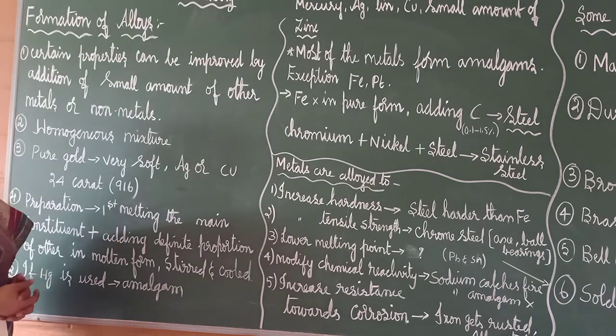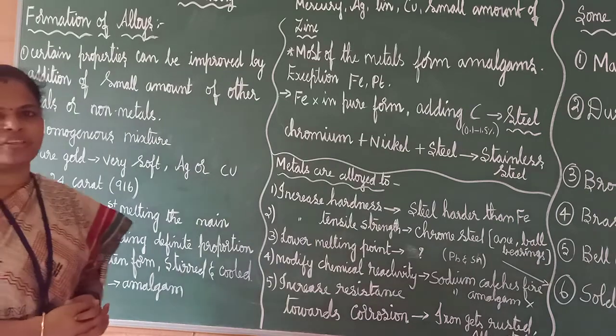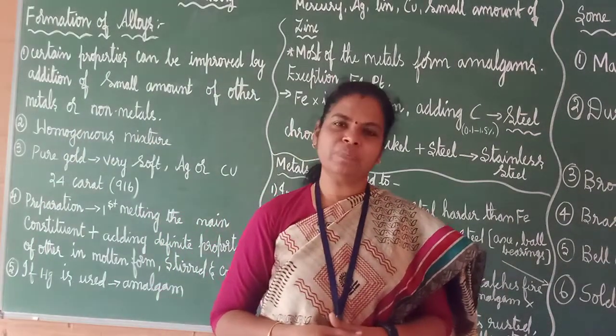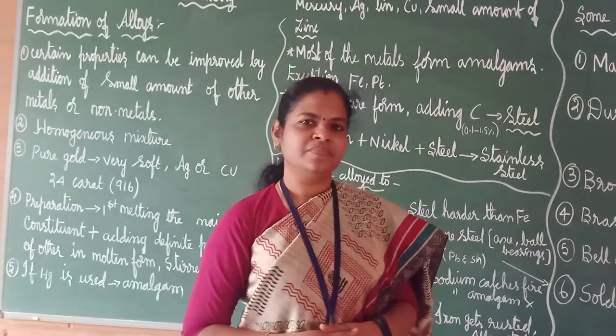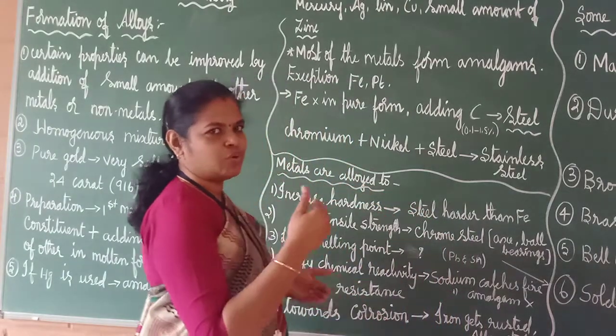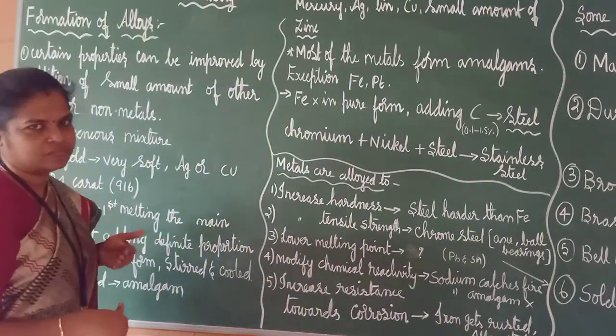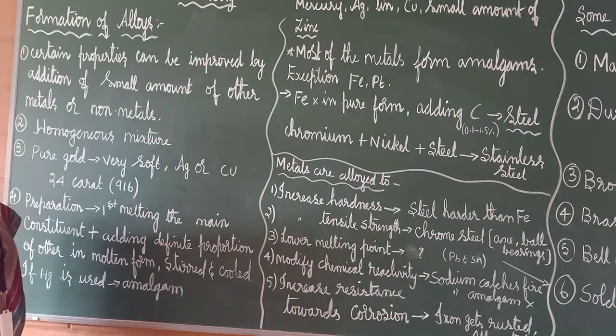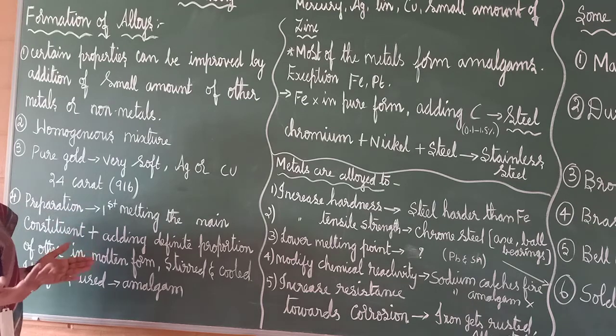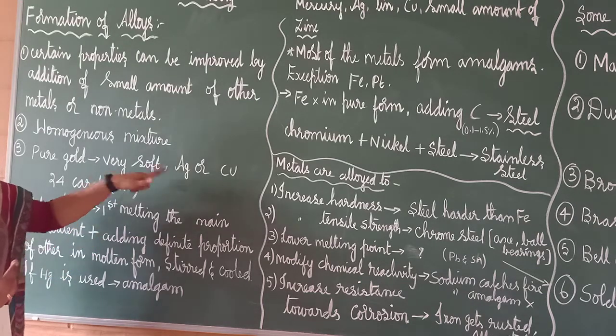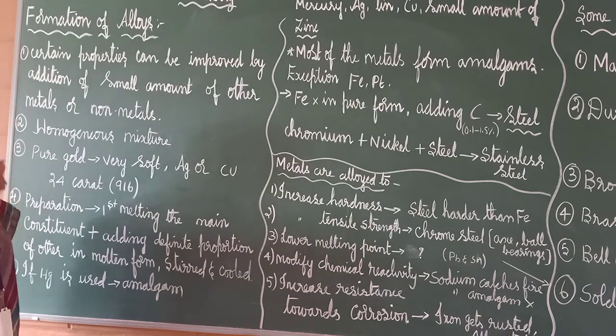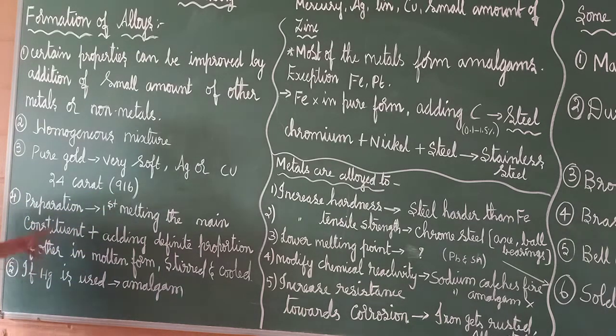And we can also see in about this, 916 they will give. The ads and all they show. 916. What do you mean by that 916? Any idea? 22 by 24. If you divide now, you will get 916. So, it is not the pure gold. What is added? Ag can be added or Cu can be added. Two parts. So, 22 by 24, that is 916.